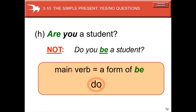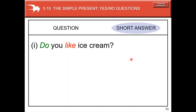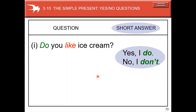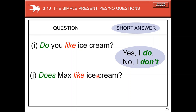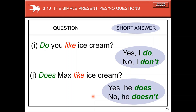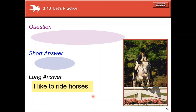'Do you like ice cream?' Short answers: 'Yes, I do' or 'No, I don't.' 'Does Max like ice cream?' Short answers: 'Yes, he does' or 'No, he doesn't.' For the picture shown: the long answer is 'I like to ride horses,' so the question uses 'you': 'Do you like to ride horses?' Short answer: 'Yes, I do.'